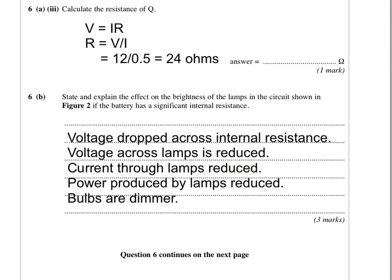The voltage dropped across the internal resistance means the voltage across the lamps is reduced. If there's less voltage across the lamps, their resistance is fixed, so the current through them is reduced. Or to put it another way, the power produced by the lamps is reduced. Either way, the bulbs are dimmer. As long as you make three good points, or two good points with the statement that the bulbs are dimmer, that's enough to get the marks.